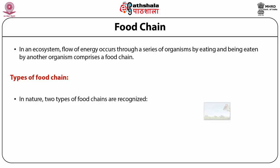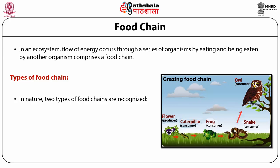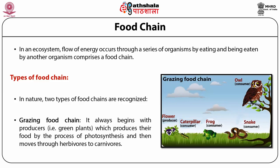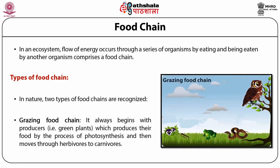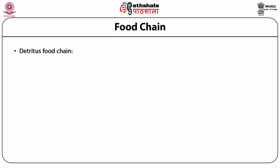Types of food chain. In nature, basically two types of food chains are recognized. The first is the grazing food chain, which always begins with producers — green plants that produce their food by the process of photosynthesis — and then moves through herbivores to carnivores. This type of food chain is directly influenced by the influx of radiant energy from the sun. Thus, the grazing food chain depends on the captured energy of autotrophs and then the movement of this energy to the herbivores.